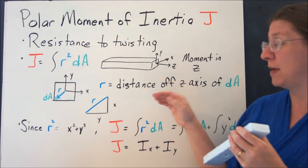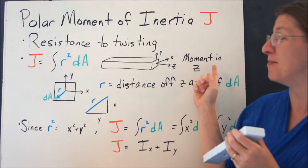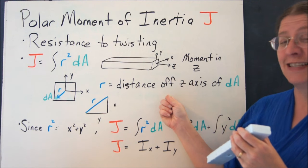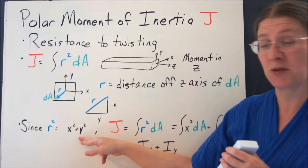It measures resistance at the moments in z. R is the distance off that z-axis, and you can see that R is going to be the square root of x² plus y².